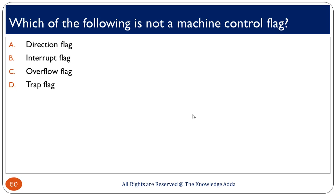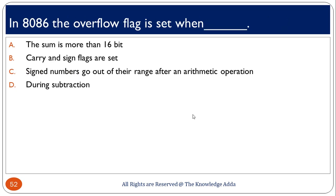Which of the following is not a machine control flag? The flags in the 8086 microprocessor are divided into machine control flags and status flags. The overflow flag is not an example of a machine control flag. In the 8086, the overflow flag is set when a signed number goes out of range during an arithmetic operation; otherwise it is reset.